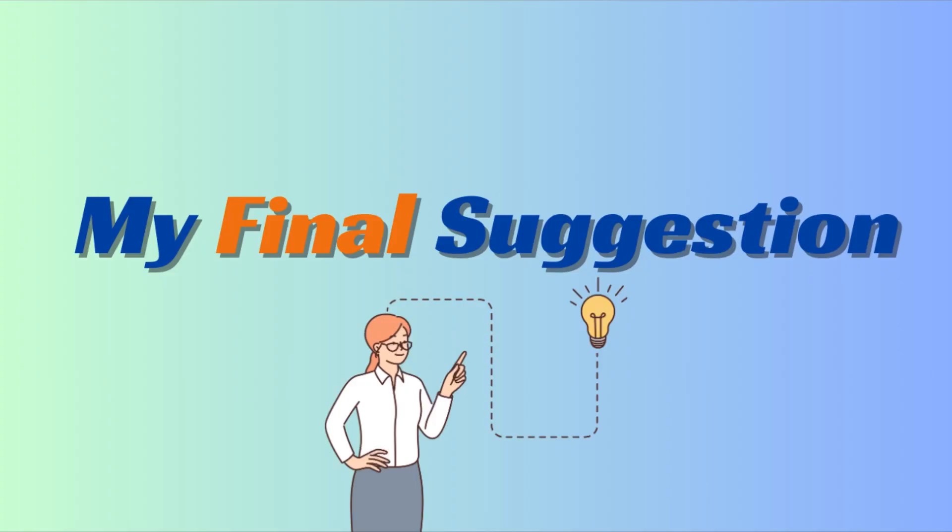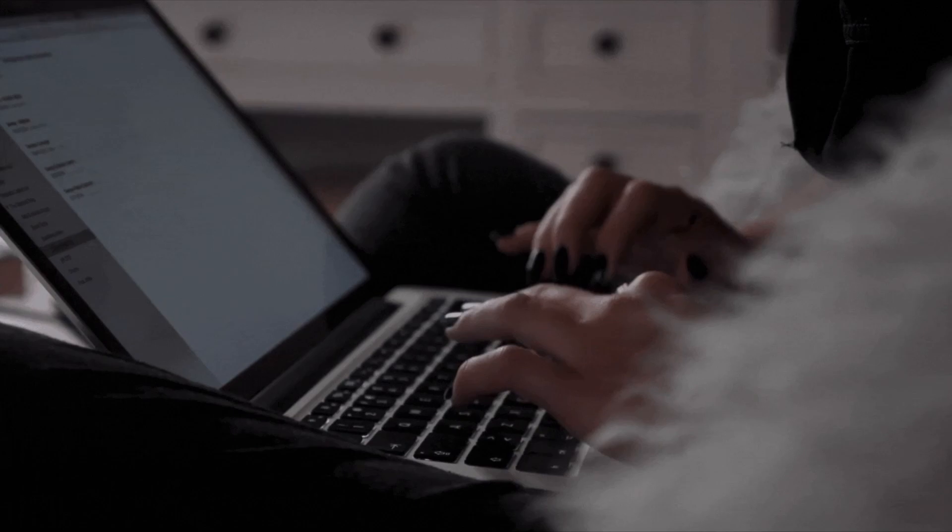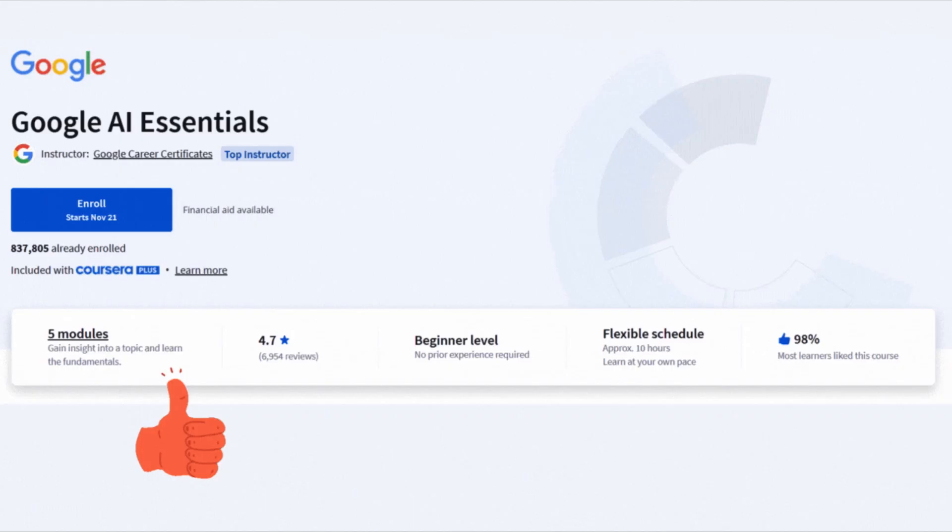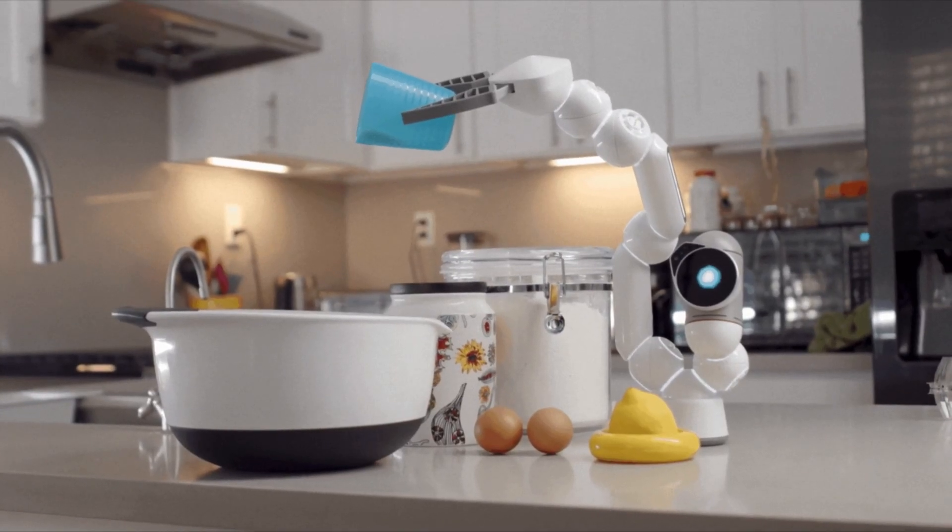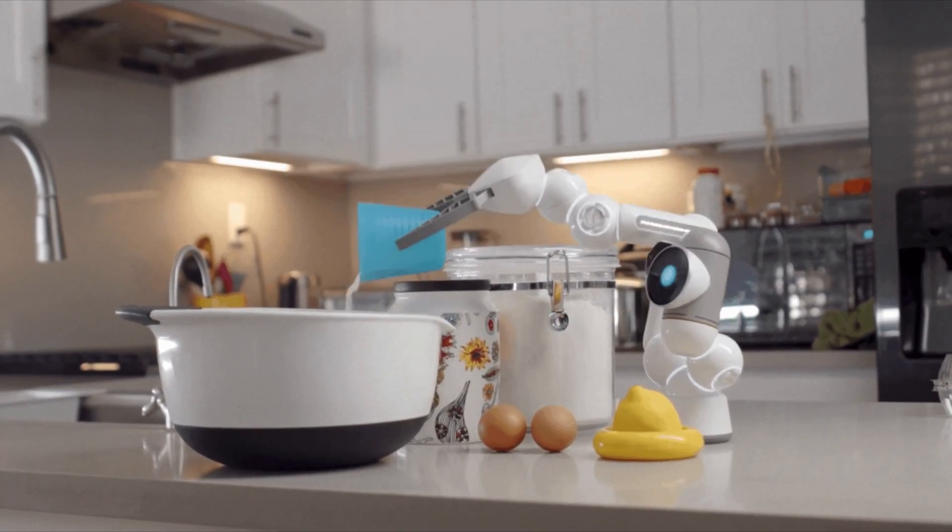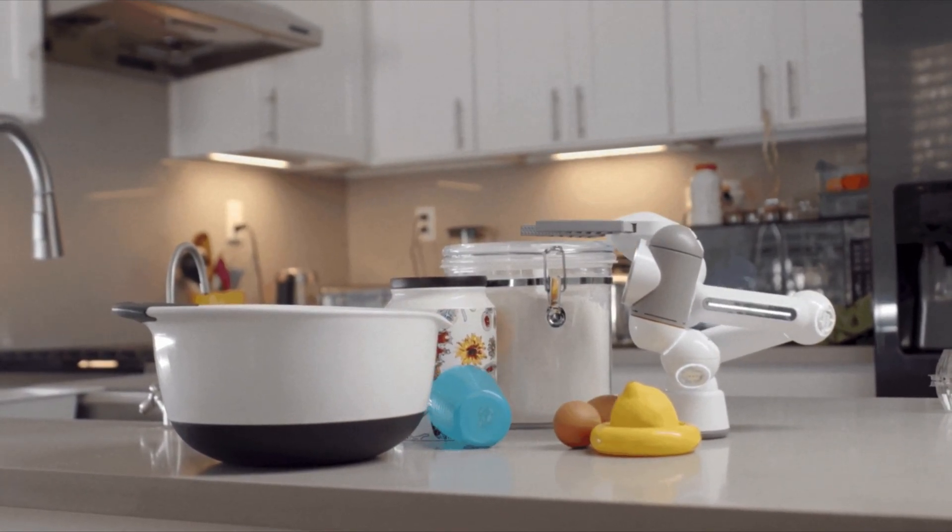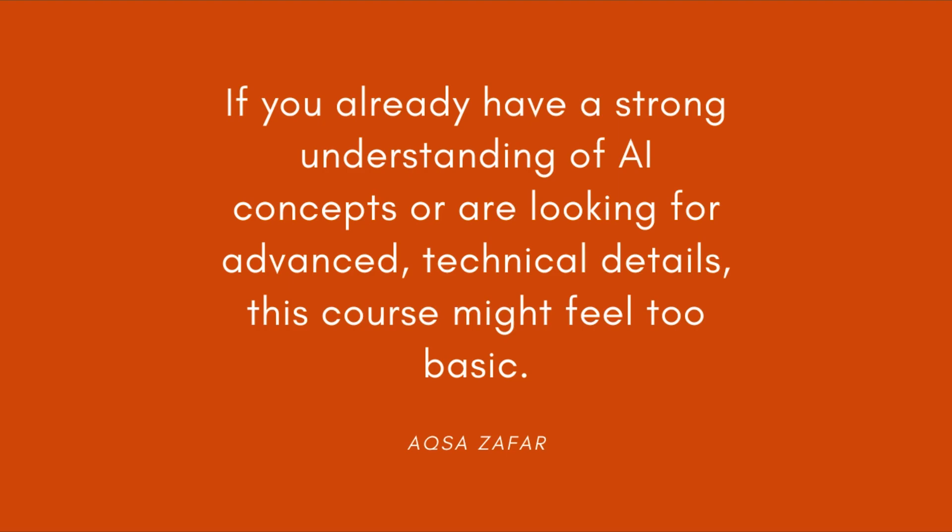So my final suggestion is, if you are completely new to AI and want to learn the basics in a simple and easy-to-understand way, I highly recommend the Google AI Essentials course. It's perfect for beginners, students curious about technology, and professionals who want to use AI tools in their daily work. The course covers practical examples and focuses on ethical use, which is great for anyone starting out in this field. If you already know a lot about AI, this course might feel too simple. It doesn't cover advanced AI topics or technical details in depth. But for beginners, it's a great starting point and will help you build a strong base to learn more about AI later.